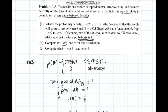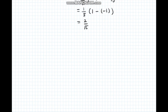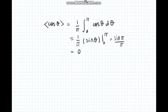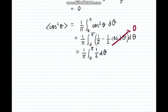Part c asks for the expectation of sin theta, cos theta, and cos squared theta. Using the general expectation value equation with the same limits, for sin theta we integrate and get 2 over pi. For cos theta we get 0. For cos squared theta we use the same procedure along with the double angle trig identity, and we get 1 over 2.